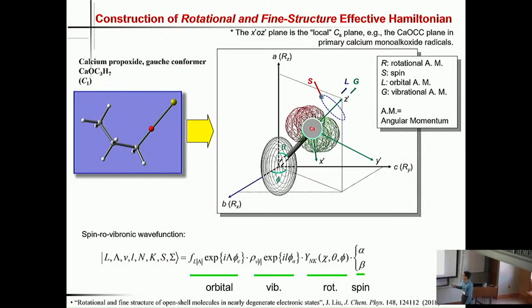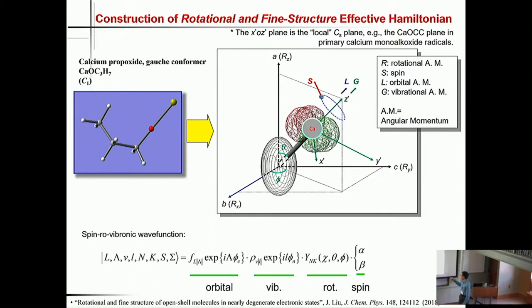I use the gauche conformer of calcium isopropoxide as an example because it's a C1 molecule. For the rotational part, we can represent it using the rotational ellipsoid. Because the unpaired electron is localized on calcium, we can assume that the orbital angular momentum is along the Ca-O direction, and because the Ca-O-methyl group bending is the dominant Jahn-Teller active mode, we can also assume that the vibrational angular momentum is along the same direction.